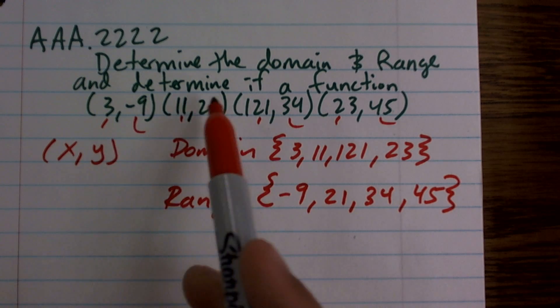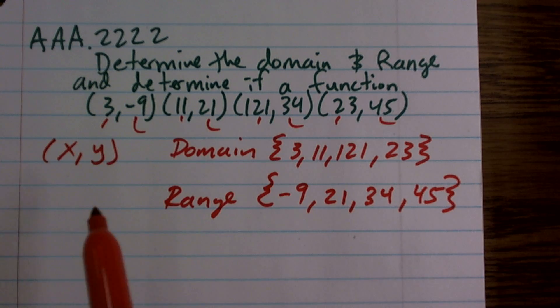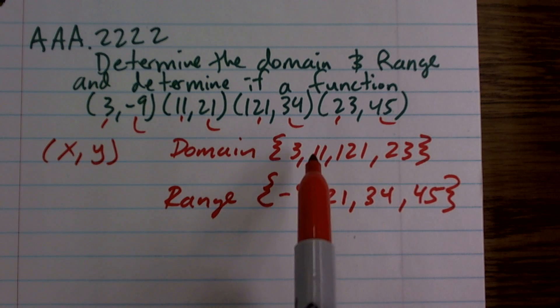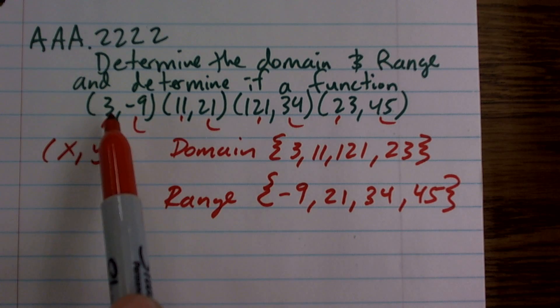So the last question says, determine if a function. Well, determine if this relation is a function. So what we need to do is remember if it's going to be a function that every element in our domain maps to exactly one element in our range. And you can see by these ordered pairs that they all map to one.